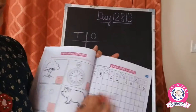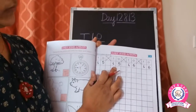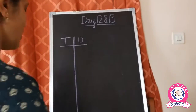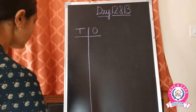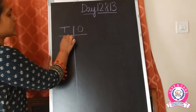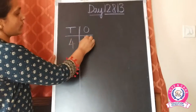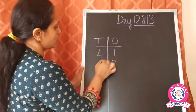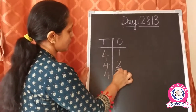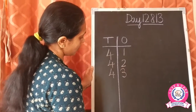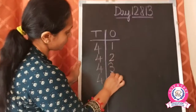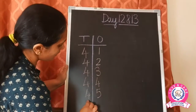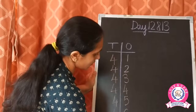Now here you have to write the numbers 45 and 46 that we have already done. So we are again going to start with the first number: forty-one, forty-two, forty-three, forty-four, forty-five, forty-six.